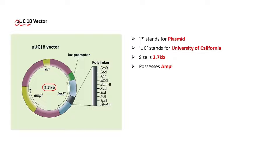This vector possesses an ampicillin resistance gene, which can be used as a selectable marker to identify positive clones. Unlike PBR322, which possesses both an ampicillin resistance gene and a tetracyclin resistance gene (designated TETR), PUC18 possesses only the ampicillin resistance gene and no tetracyclin resistance gene. This point needs to be noted: PBR322 contains both ampicillin and tetracyclin resistance genes.